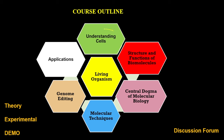In this course, we are going to discuss different aspects of molecular biology. We'll start with understanding cells — their structures, whether prokaryotic or eukaryotic — and then talk about cellular activities such as cell division, apoptosis, and autophagy. We'll also cover biomolecules including nucleic acids, proteins, and enzymes, and the central dogma of molecular biology, which includes replication, transcription, and translation.